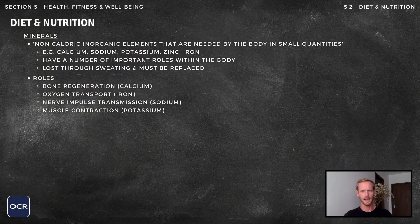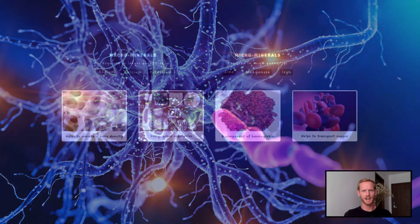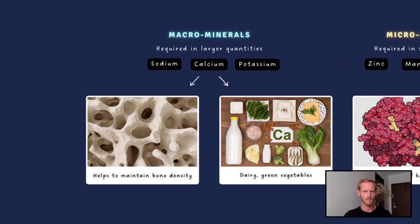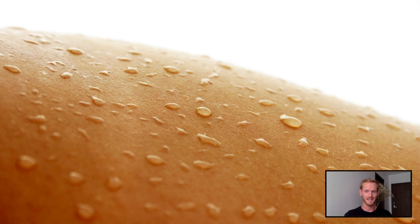Minerals are calorie-free inorganic elements that are essential for a number of bodily processes including muscle contraction, bone regeneration and the transmission of nerve impulses. Macrominerals are needed in relatively large quantities and include sodium, potassium and calcium, which is important for bone health and can be found in dairy products and green vegetables. Microminerals are needed in very small quantities and include zinc, manganese and iron, which is an essential component of haemoglobin that carries oxygen in the blood. Minerals are lost through sweating, which has clear implications for those who exercise.